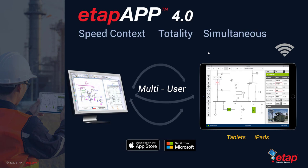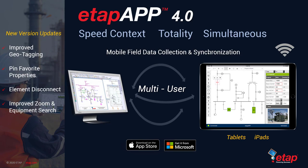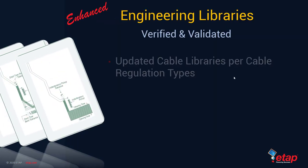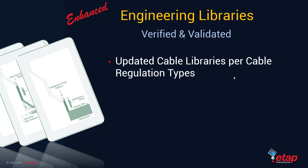ETAP App 4.0 has been enhanced to include improved geo-tagging of information. You can now pin favorites onto your ETAP App and bring your most frequently accessed favorites to the top. You can connect and disconnect elements using the one-line diagram, and you can also do equipment searches directly on the ETAP app. No release goes by without updating the verified and validated engineering libraries, and ETAP20 is no exception.